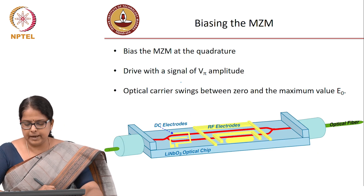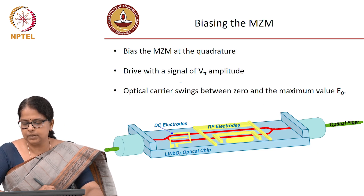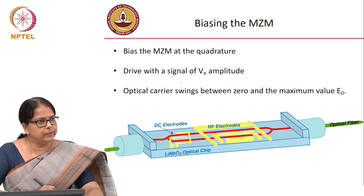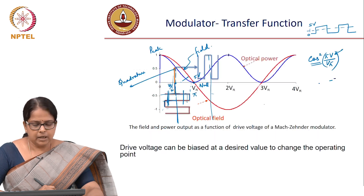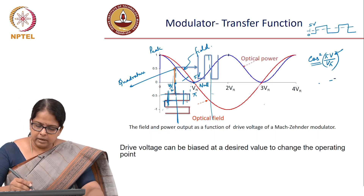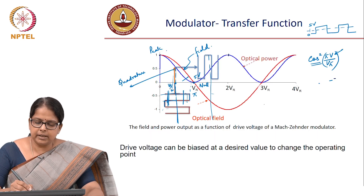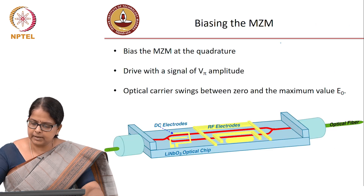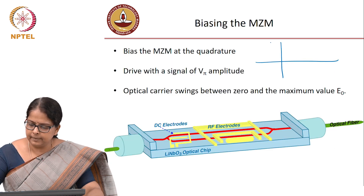If you drive with a signal of Vπ amplitude, the optical carrier swings between zero and the maximum value. Now, if you are measuring in terms of optical power, let me just sketch the transfer function once again.